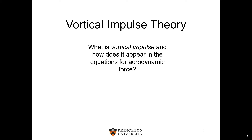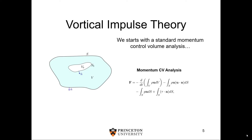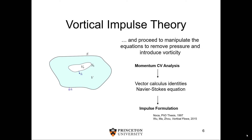So what is vortical impulse? For those of you who aren't familiar, I'll give you a very brief overview. We get to it by starting from the standard momentum control volume analysis, and then through the application of various vector calculus identities and the substitution of the Navier-Stokes equation, we come to what we call the impulse formulation. In my opinion, the best source for this derivation would be NOCA's 1997 thesis done at Caltech. There's also great information in the more recent book, Vortical Flows by Wu Manzhu, from 2015.